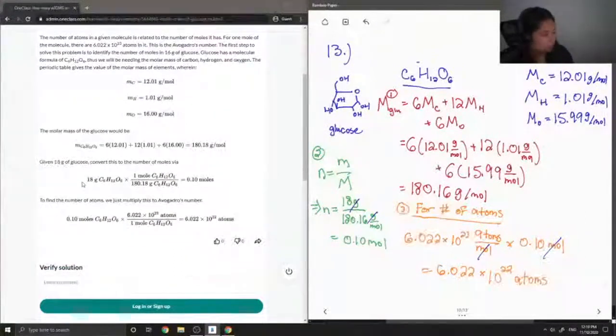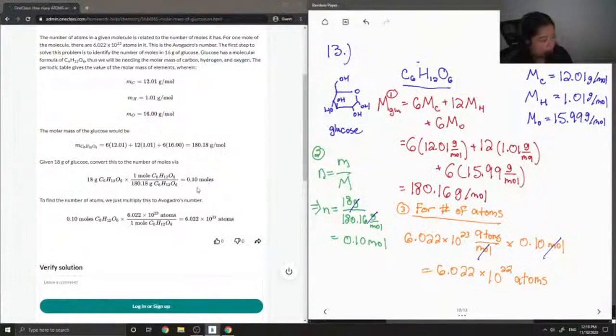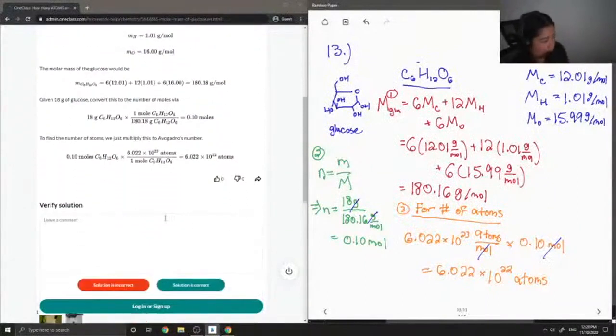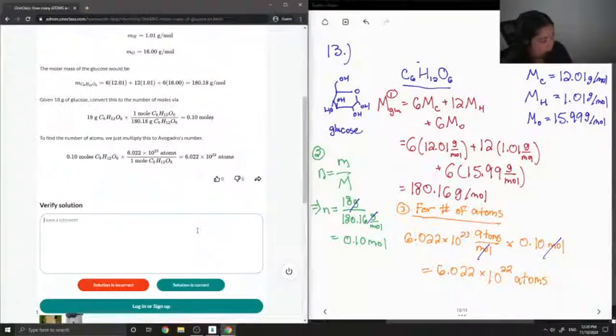Yeah, given 18 grams of glucose, convert this to the number of moles. They got 0.1. To find the number of atoms, we just multiply this to Avogadro's number, and you get 6.022 times 10 to the 22 atoms. So this solution is correct.